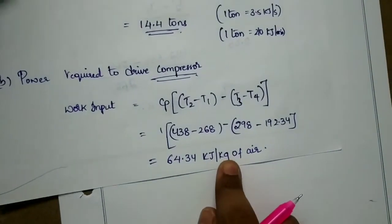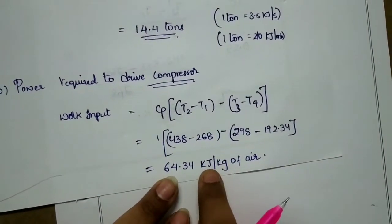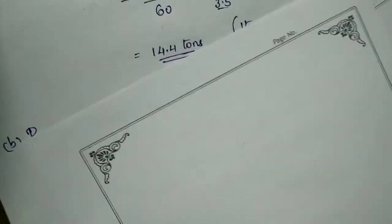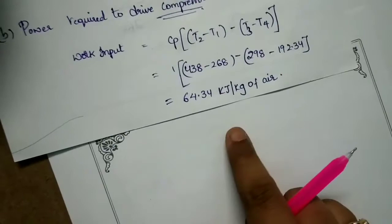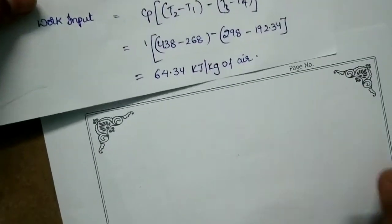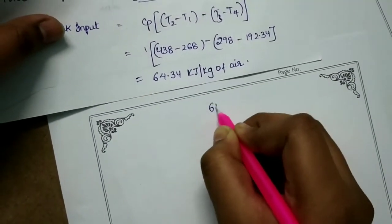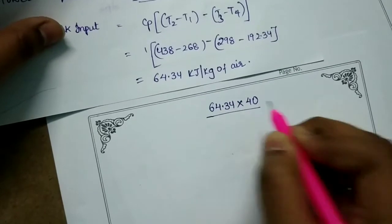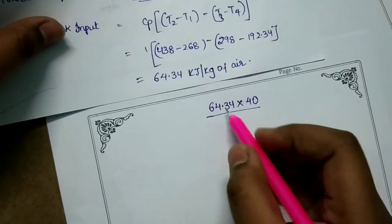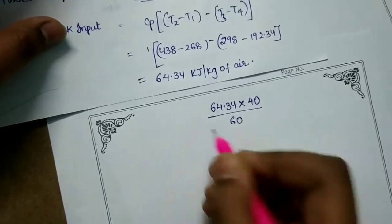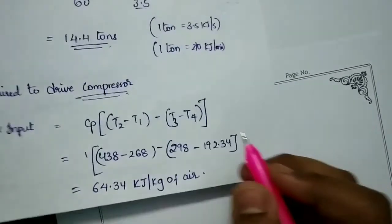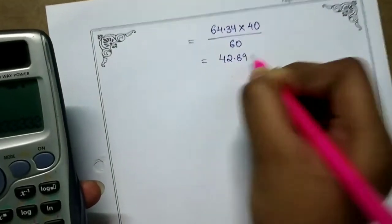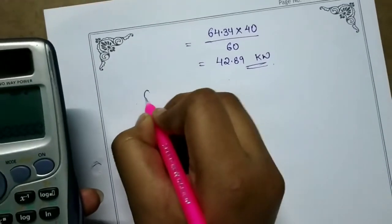Power per second is 64.34 into mass, which is 40 kg per minute. Converting to per second by dividing by 60, that is 42.89 kilowatts.